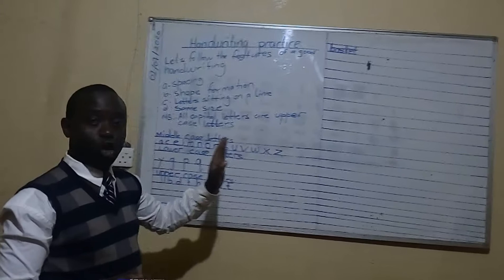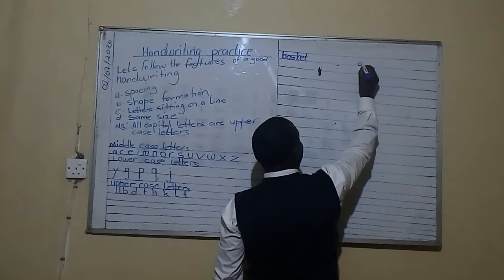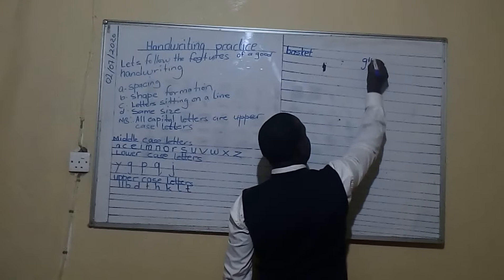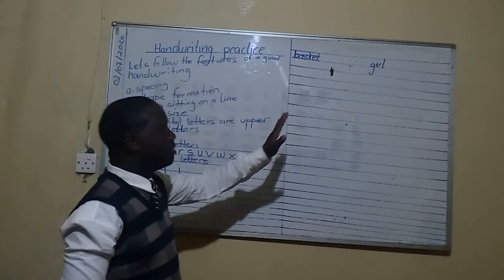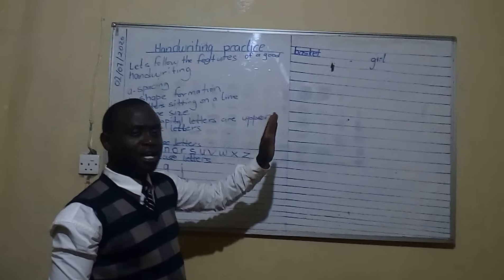Let's have another example — the word 'girl.' We have G, which stretches down to the lower line — it is a lower case letter. Then I and R are middle case letters. And L goes up to the upper line, so it is an upper case letter. So in the word 'girl,' G stretches going down — lower case — I and R are middle case letters, and L stretches upwards.